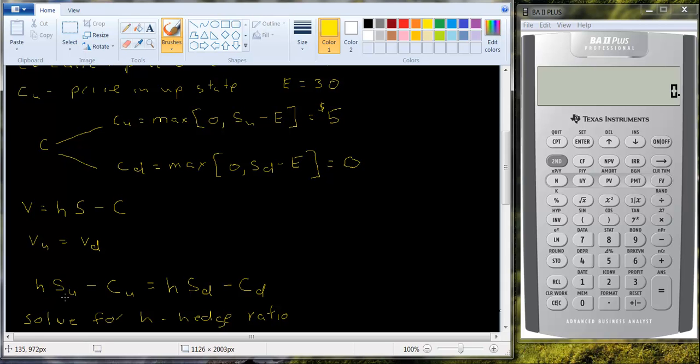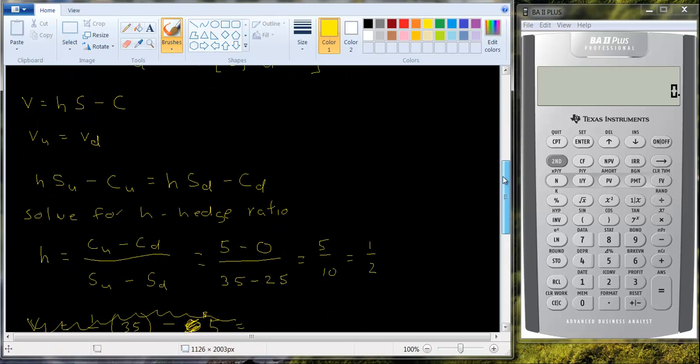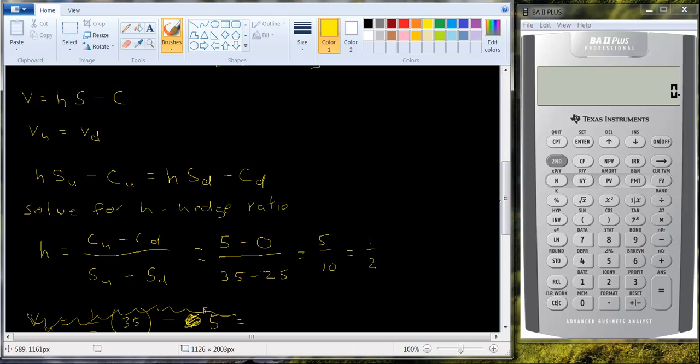So what do you do? You basically set the value of the portfolio which is in the up state, which is the number of shares times the value of the stock, price of the stock in the up state minus the value of the call in the up state equal to the value of the portfolio in the down state and you solve for H. And we call that the hedge ratio. And we worked it out that the hedge ratio was one half. So you should buy half a share of stock for every one call option you write.